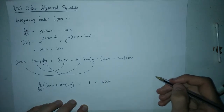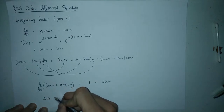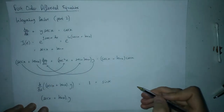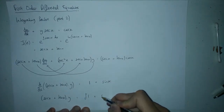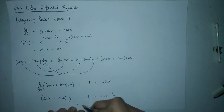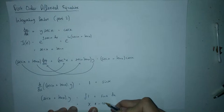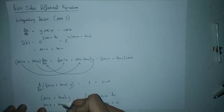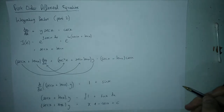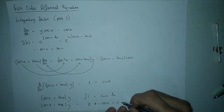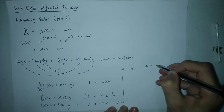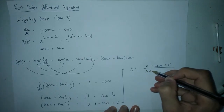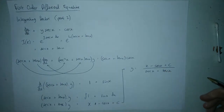We now integrate both sides. The left side becomes (sec x + tan x) times y. On the right, the integral of 1 is x, and the integral of sin x is minus cos x, giving x − cos x + c. Finally, dividing by sec x + tan x, the solution is y = (x − cos x + c) / (sec x + tan x).